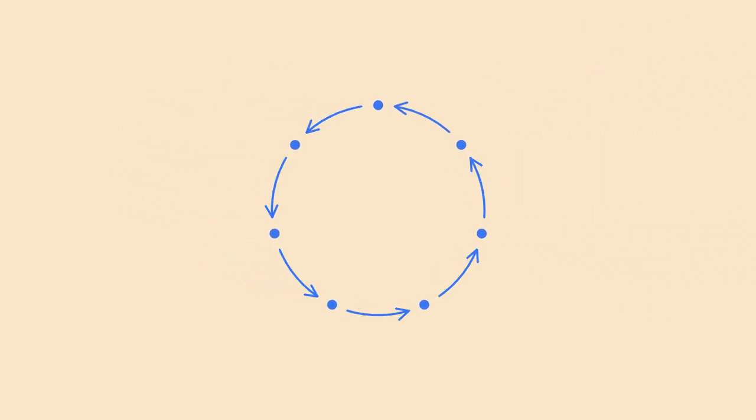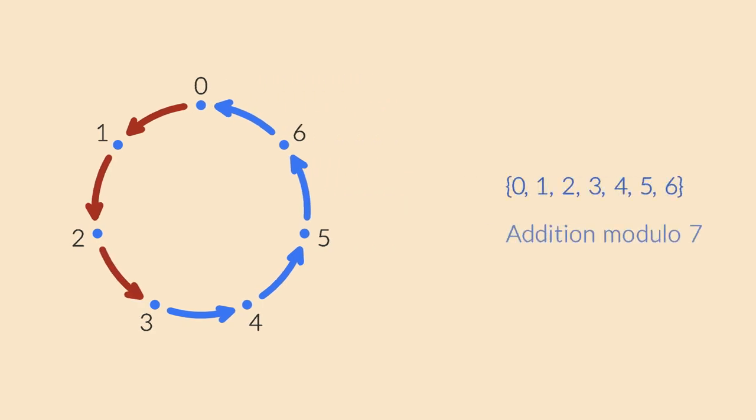This works for any cyclic group. You just count how many times you perform the generator, so each element is a kind of integer multiple of the generator. For a finite group, it only takes a finite number of steps to reach the identity element. At that moment, you have basically come all the way around, and the cycle repeats. Our count falls back to zero before we continue counting. Whenever you take more than n steps, you come back to zero.